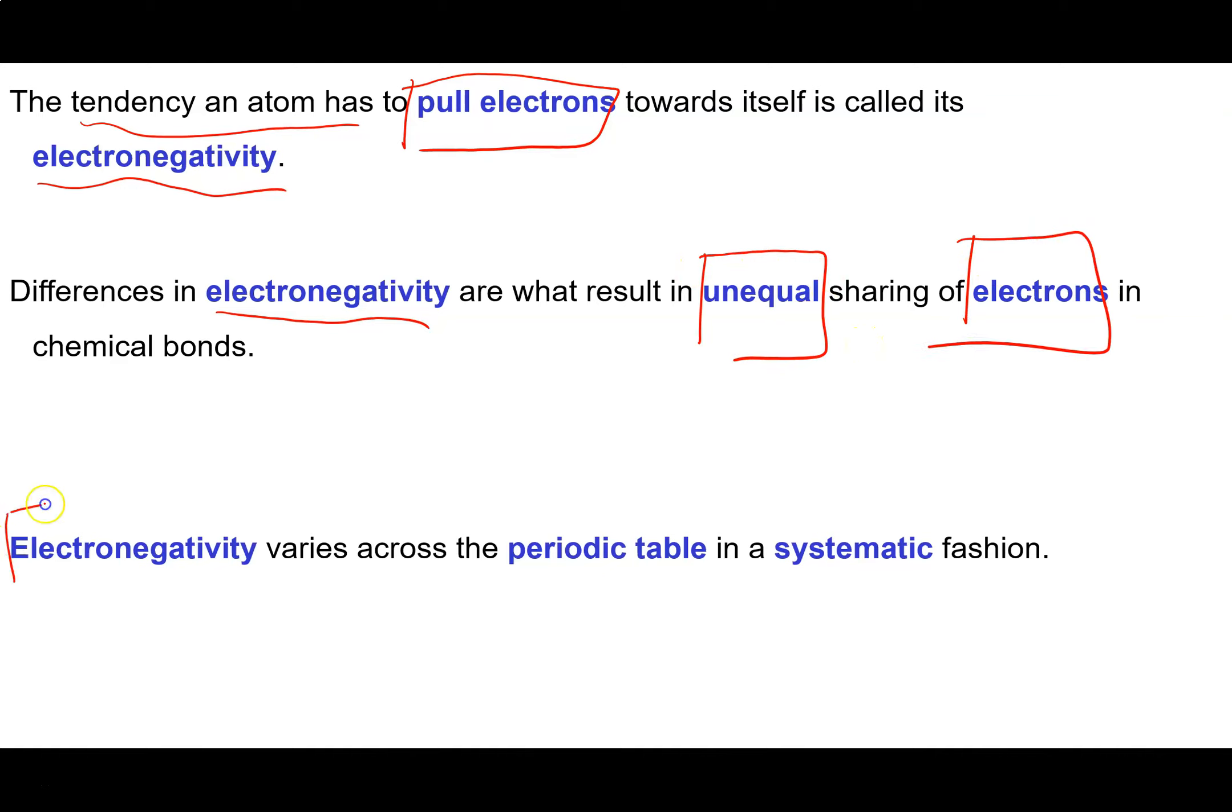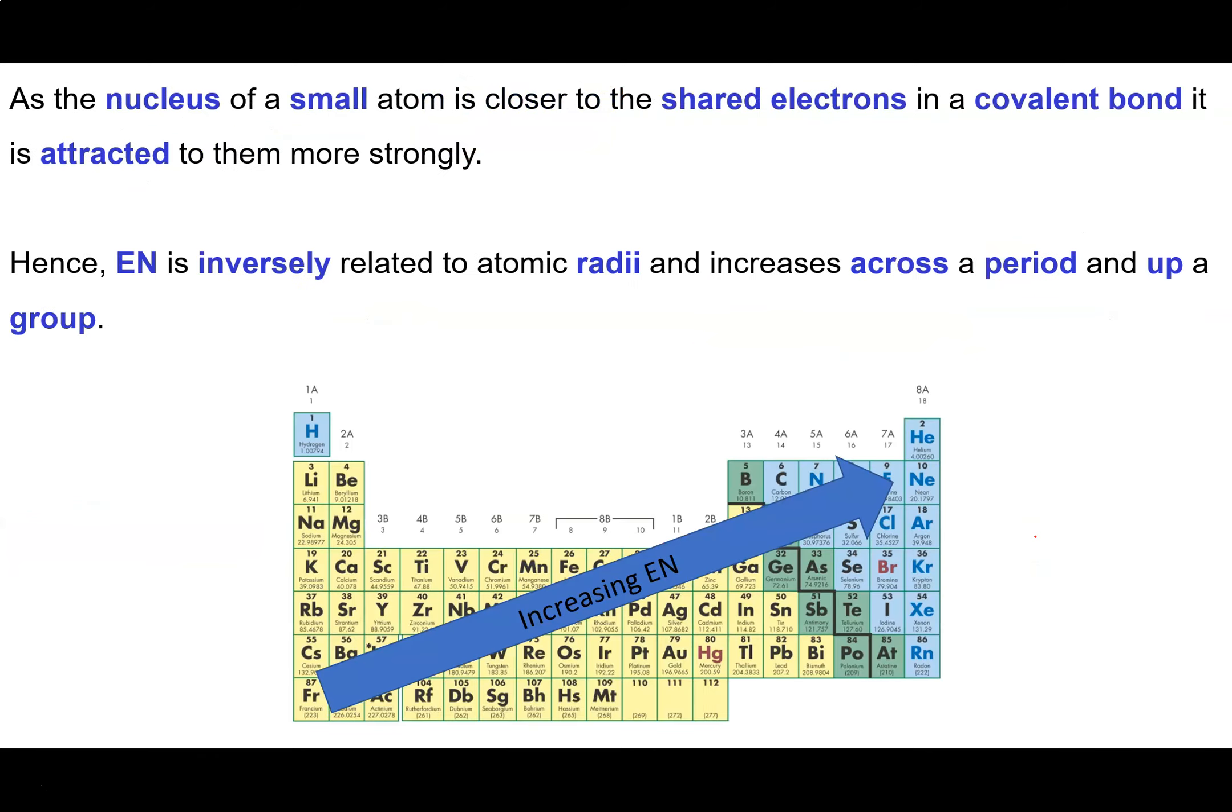Now fortunately for us electronegativity varies in a very systematic fashion across the periodic table. So how it works is this: As the nuclei of that small atom is closer to the shared electrons in a covalent bond, it is attracted more strongly to them.